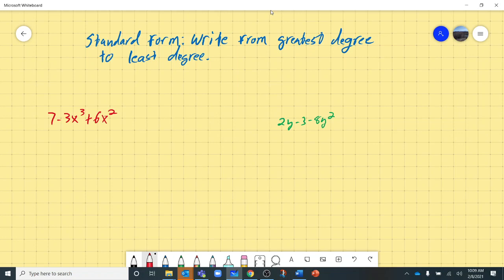The negative 3x cubed, that's a third degree. And the 6x squared, that's a second degree. So we're not looking at the negative. We're just looking at the degree of the polynomial.